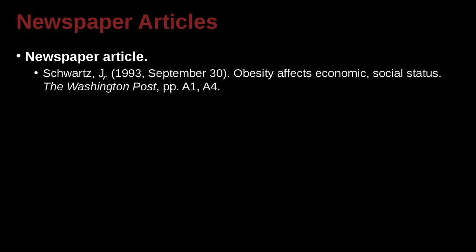How about a newspaper article? Newspapers tend to be daily. So here's an example of a daily newspaper. We've got the author's name — last name, surname — and then the first name initial, year, month, and day, because newspapers are daily. So this is the way you write it: year, comma, month. You write out the whole month, not the abbreviation — no comma, just a space, and then the day. So: year, month, day. And we've got a comma over here.